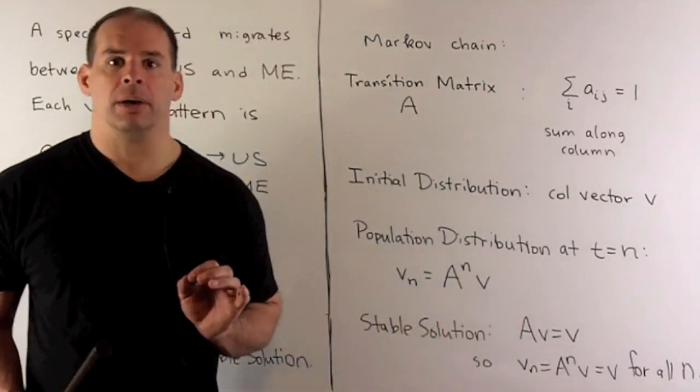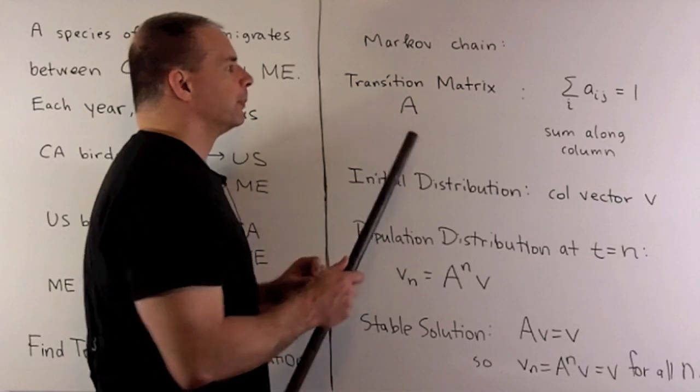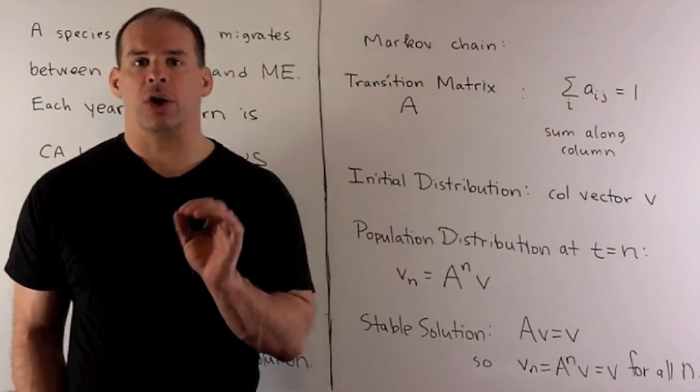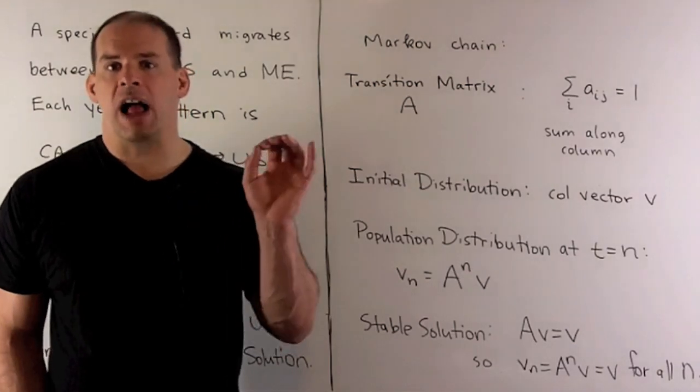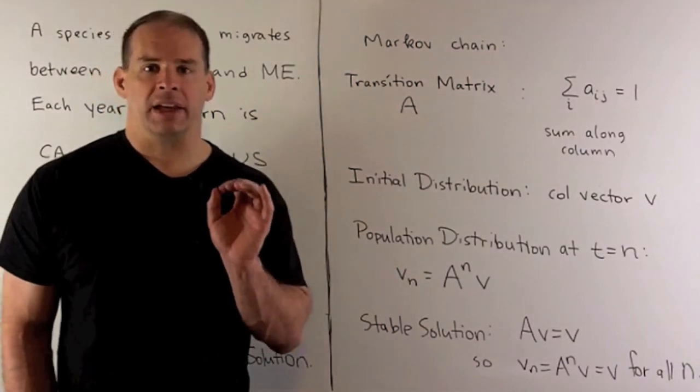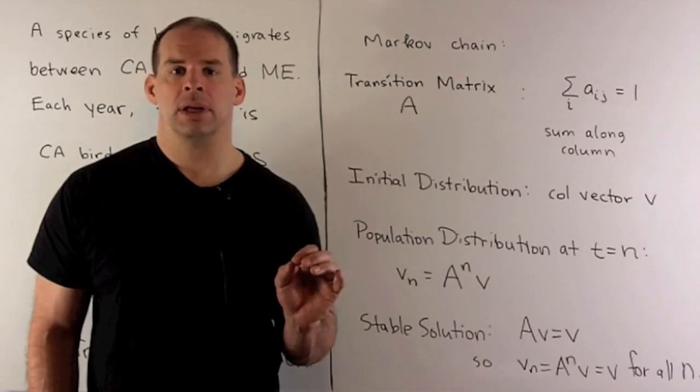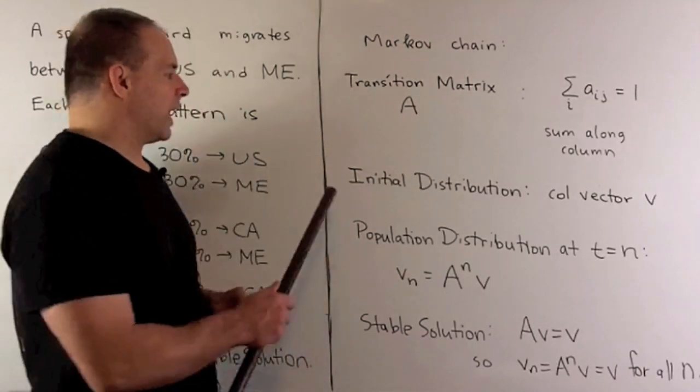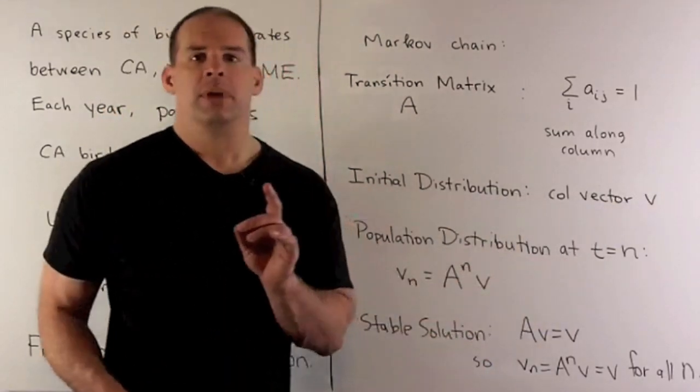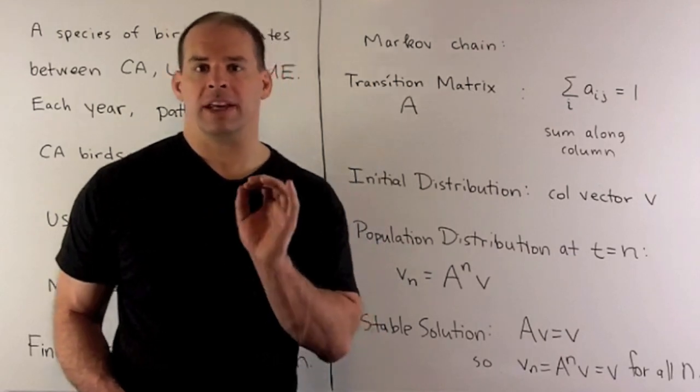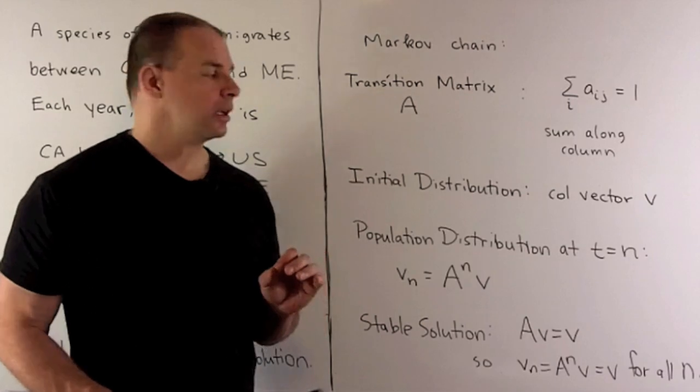What's the setup here? We're going to start off with a transition matrix that I'll call A. All the entries of A are going to be between 0 and 1 inclusive. The sum along each column is going to be equal to 1. The idea here, we should be thinking of these as probabilities. Then, we're going to have an initial distribution, a column vector V that'll keep track of the populations for the Canadian, the US, and the Mexican birds.